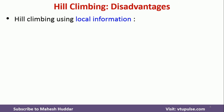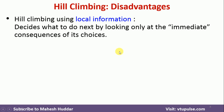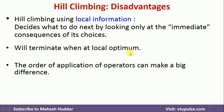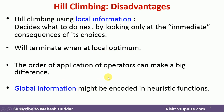Now we will understand the disadvantages of Hill Climbing in terms of local versus global information. If I consider local information, we decide what to do next by looking only at the immediate consequences. Such a decision is called local information. But if I make such decisions, I may end up with a local optimum and may not be able to get the global optimum. If I use global information, I will definitely end up with the global optimum. Rather than considering just immediate consequences, we will consider the heuristic function, which considers all possible future consequences as well.